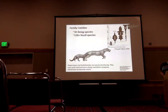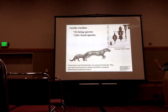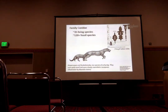Family Canidae has about 35 living species within the subfamily Caninae, which is the only living subfamily, but there's a huge number of fossil species. It's one of the best groups for working on methods for including fossils in analysis, because we have more fossil species than living species.